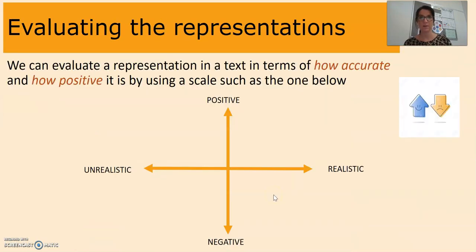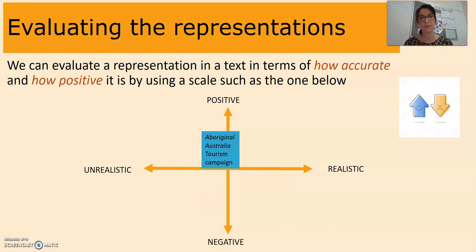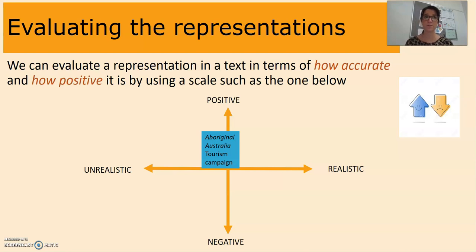The next thing we need to do is talk about evaluating representations. We can assess how accurate or how positive a representation is by using a scale — is something positive or negative, realistic or unrealistic in the way it represents a certain group? For the Aboriginal tourism ad, I would place it as a positive representation of Indigenous Australians, but moved a little towards the unrealistic end of the scale, because I question whether it's realistic that Aboriginal people still fish that way using spears. Although it does paint them as experts, which is a good thing.